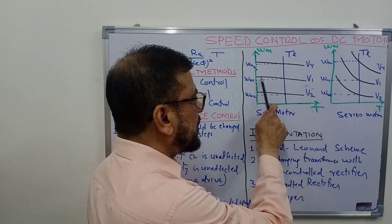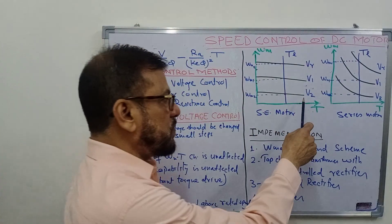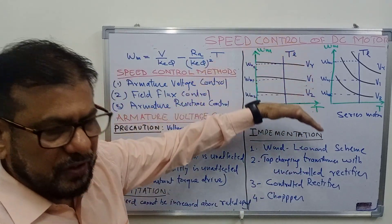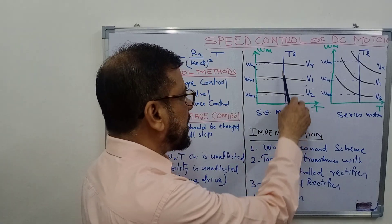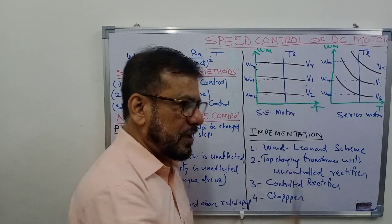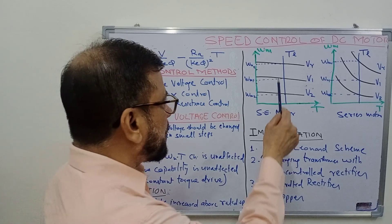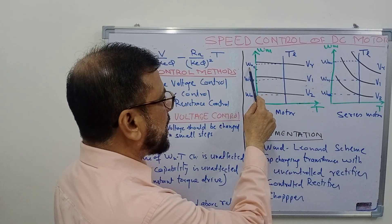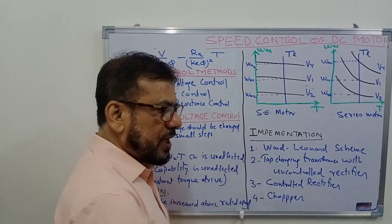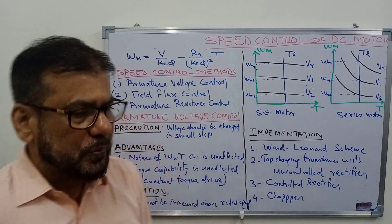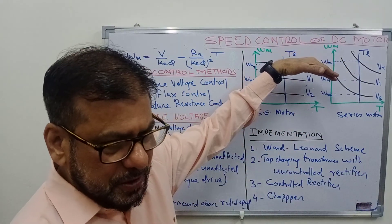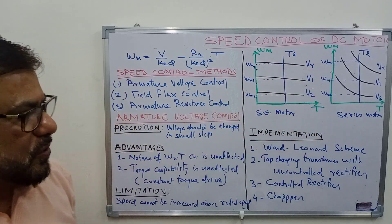For V1 less than VR and V2 less than V1, the characteristics shift parallel to themselves. For a constant torque load, the intersection of the load and motor characteristics gives the operating point. At rated voltage the speed is ωmR, at voltage V1 the speed is ωm1, and at V2 the speed is ωm2. So you can vary the speed over the whole range from rated speed down to a very low speed close to zero.